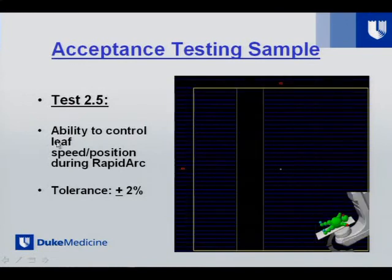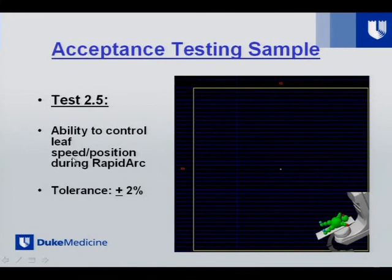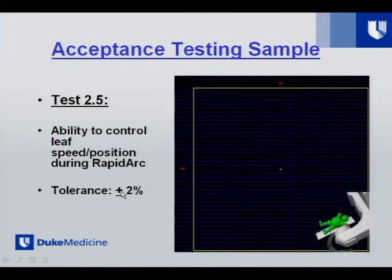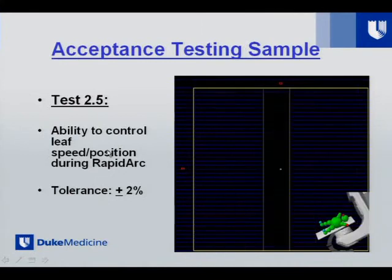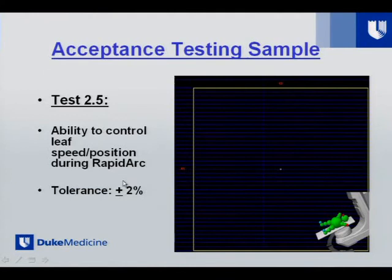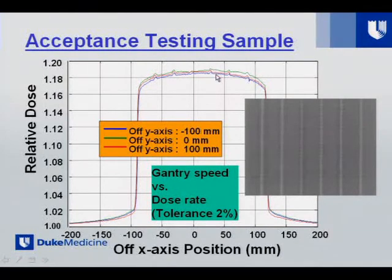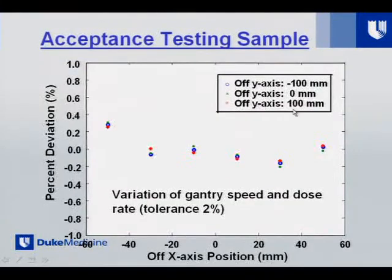We also test dosimetric accuracy — specifically the accuracy of dose rate versus gantry speed during Rapid ARC. As the gantry rotates with the slit moving at different speeds controlled by the prescription of each field, we verify control of leaf speed and position throughout. Tolerance for dosimetry is plus or minus 2%. We plot picket fence images and verify gantry versus dose rate tolerance within 2 mm.